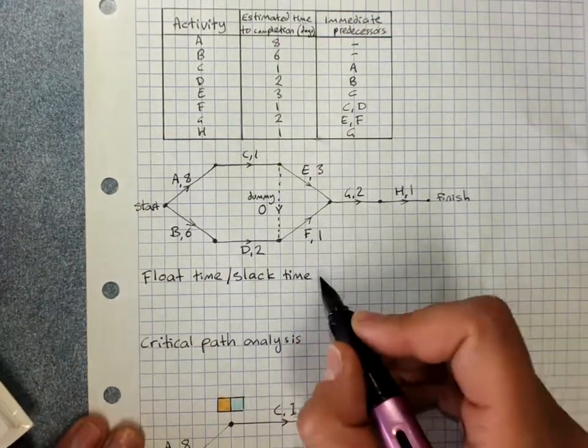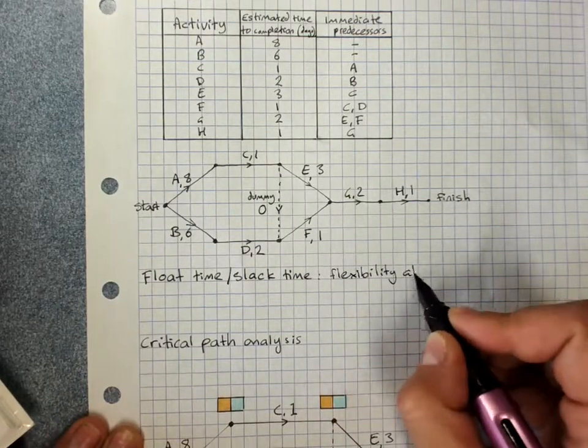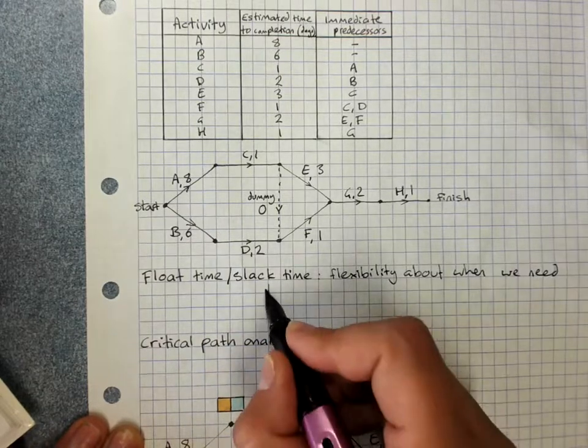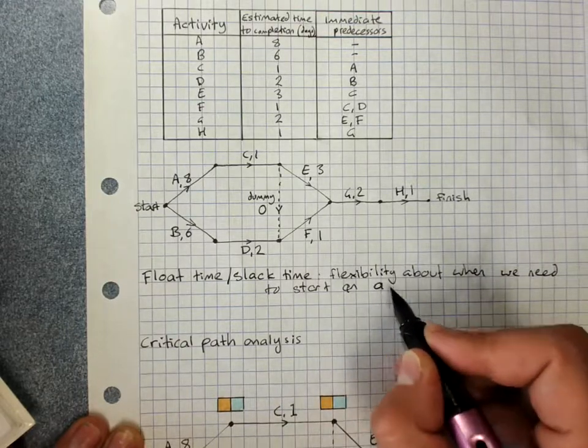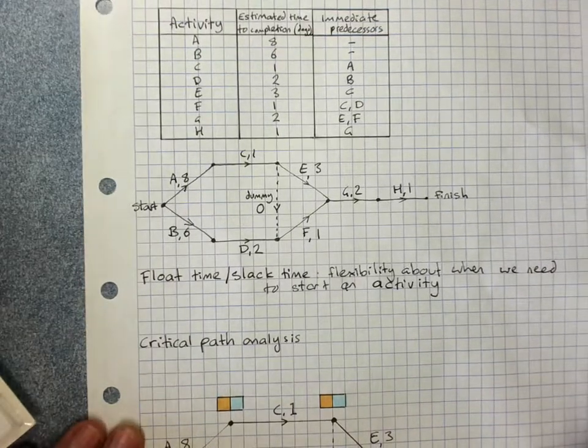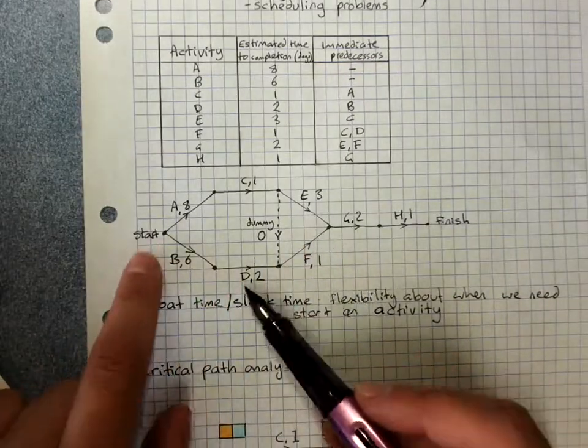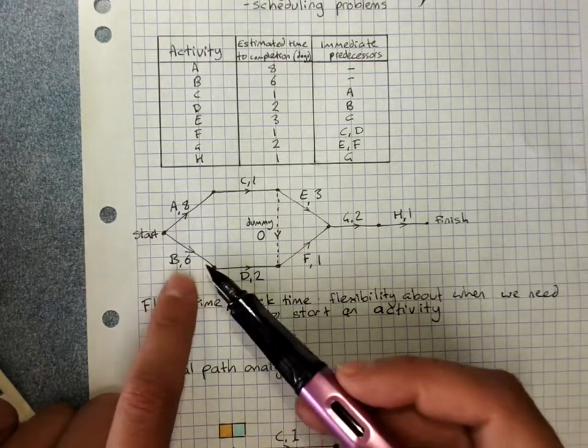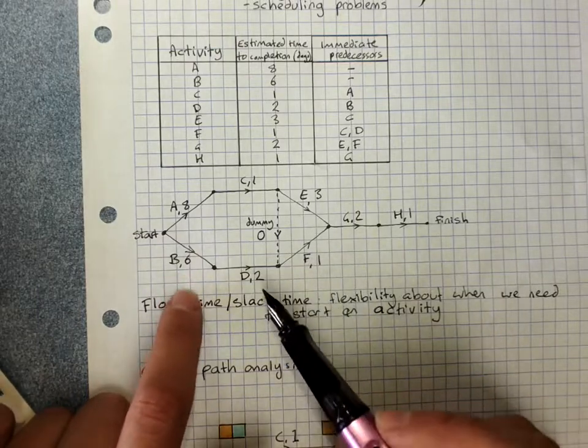So float time or slack time is flexibility about when we need to start an activity. The slack time or the float time that we've got on starting activity B here is 3 hours, because we could delay it by 3 hours because this path takes 3 hours more than this path. We wouldn't delay it any more than that.